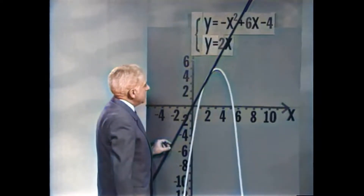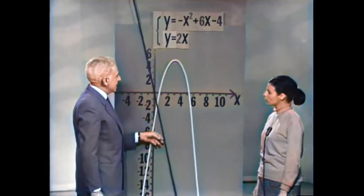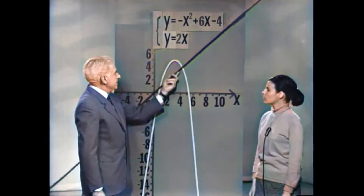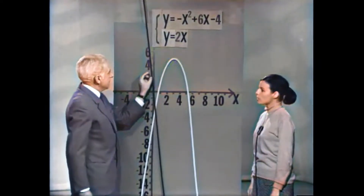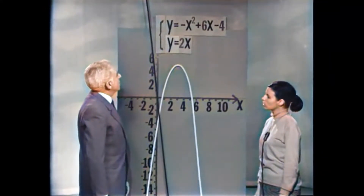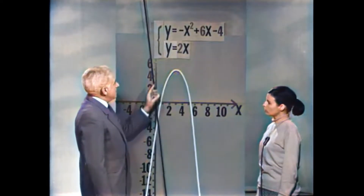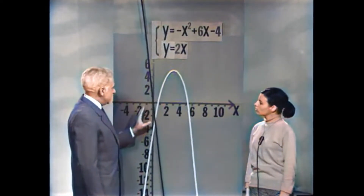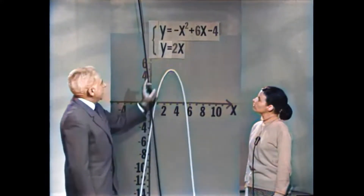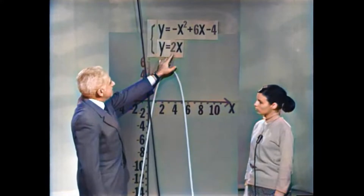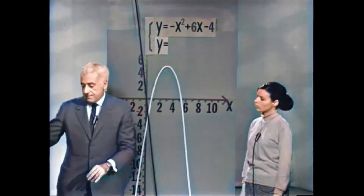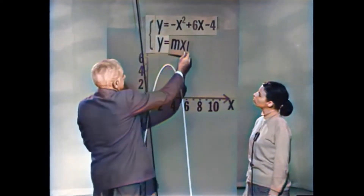מעניין יהיה לראות מהו מספר הפתרונות כאשר ממשיכים לסובב את הישר מסביב לראשית. הפרבולה תישאר במקומה — המשוואה האחת תהיה y שווה ל-x בריבוע פלוס 6x מינוס 4. במקום המקדם 2, נרשום את האות M. אם נציב במקום M מספרים שונים, נקבל ישרים שונים העוברים דרך הראשית.